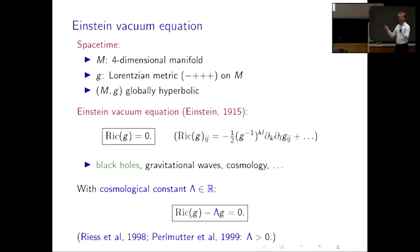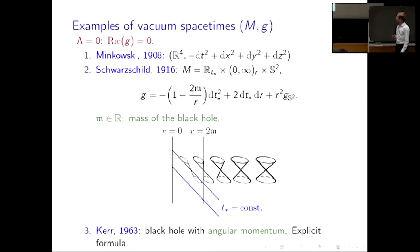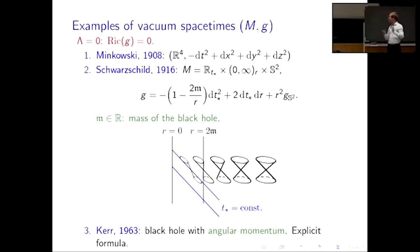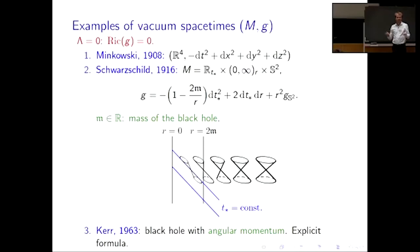The simplest example is Minkowski spacetime, already written down before the final equations of relativity: the manifold is R^4 with coordinates t, x, y, z, and the metric is the Lorentzian version of the Euclidean metric, with the time direction carrying a minus sign. The next interesting one is the Schwarzschild metric, discovered in 1916. The manifold is a product of a time direction t* and spatial coordinates in polar form, where r is basically the distance from the center of the black hole, and you have a two-sphere of directions.